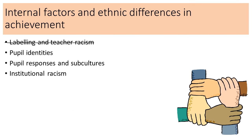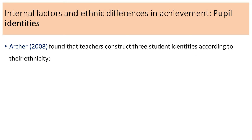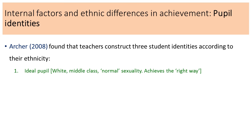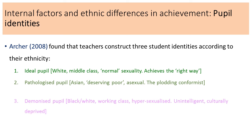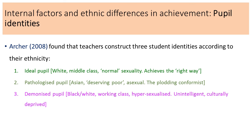Next we're going to look at pupil identities. Archer found that teachers construct three student identities according to a pupil's ethnicity. Firstly, the ideal pupil - considered to be white, middle class, with a normal sexuality, achieving in the correct way: working hard, doing homework, putting their hand up in lessons, and engaging in classwork.